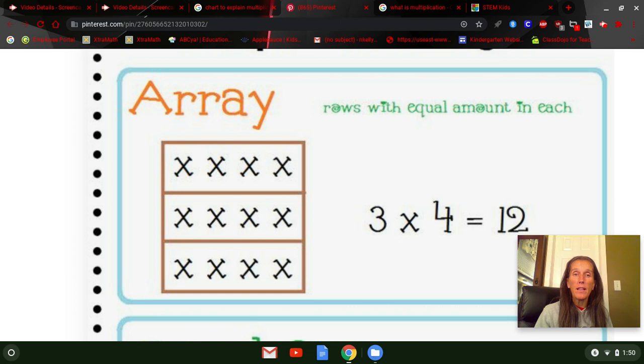And the first way is by looking at what's called an array. An array is a group of things coming in rows or columns. And if you can look at this array, there are three columns with four things in each row.